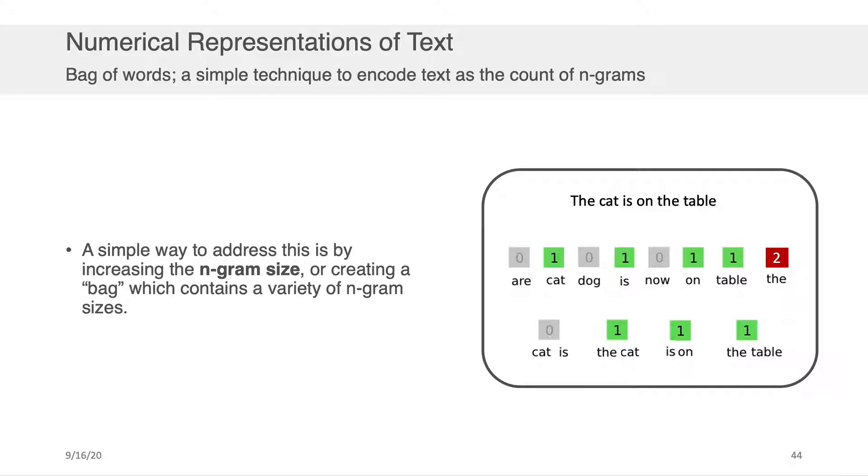So a simple way if you do need to take advantage of the order of words is to increase the n-gram size of what you put in the bag, or have the bag contain a variety of n-gram sizes. For example, we don't have to take the sentence 'the cat is on the table' and only break it up into its unigrams when creating the bag of words representation. We could break it up into its unigrams, but then also into its bigrams.